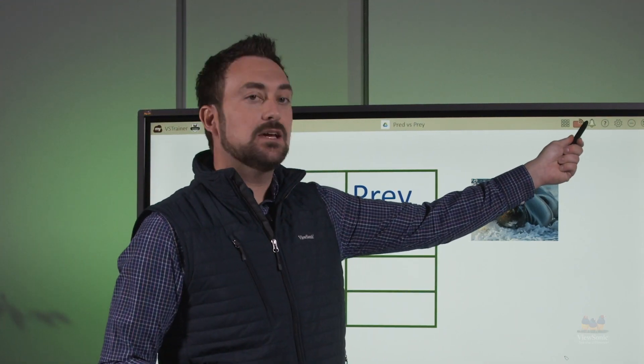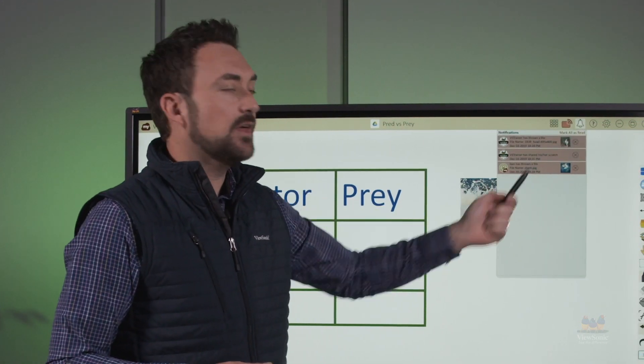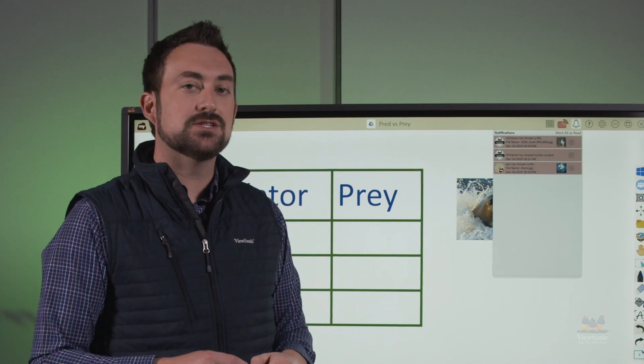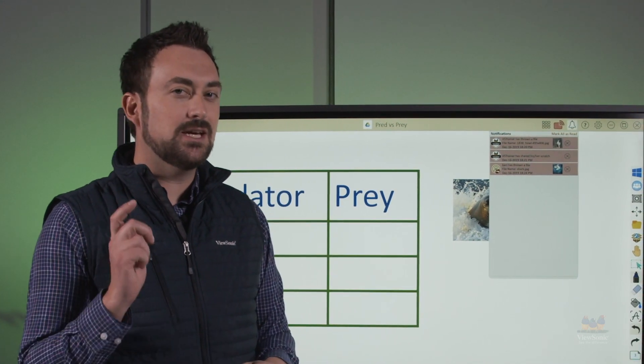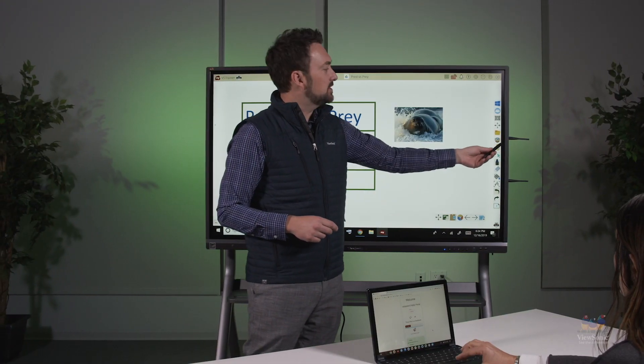Up on the top left, you'll see a little bell icon. This is my notification icon. When I touch it, I can see that a few students have thrown images to the board. I can also hear it with that ding that happened in the background.